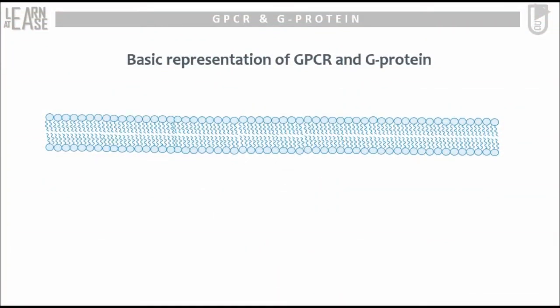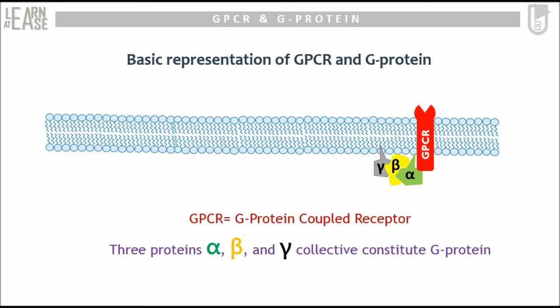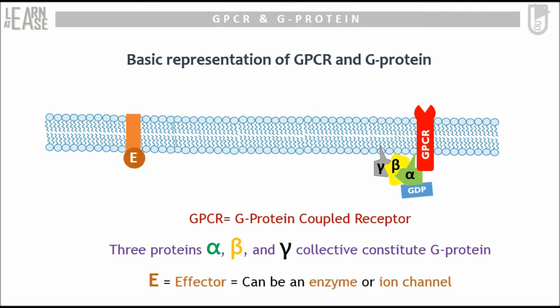The basic representation of the cell membrane is shown. Here, GPCR — that is, G-protein coupled receptor — is shown, which is a transmembrane protein. G-protein is composed of three subunits, namely alpha, beta, and gamma, bounded to GPCR. This is a trimeric protein as it is composed of three subunits. The alpha subunit is bounded to GDP, that is guanosine diphosphate. Away from this assembly, an effector molecule is shown. This can be either a protein or an ion channel.